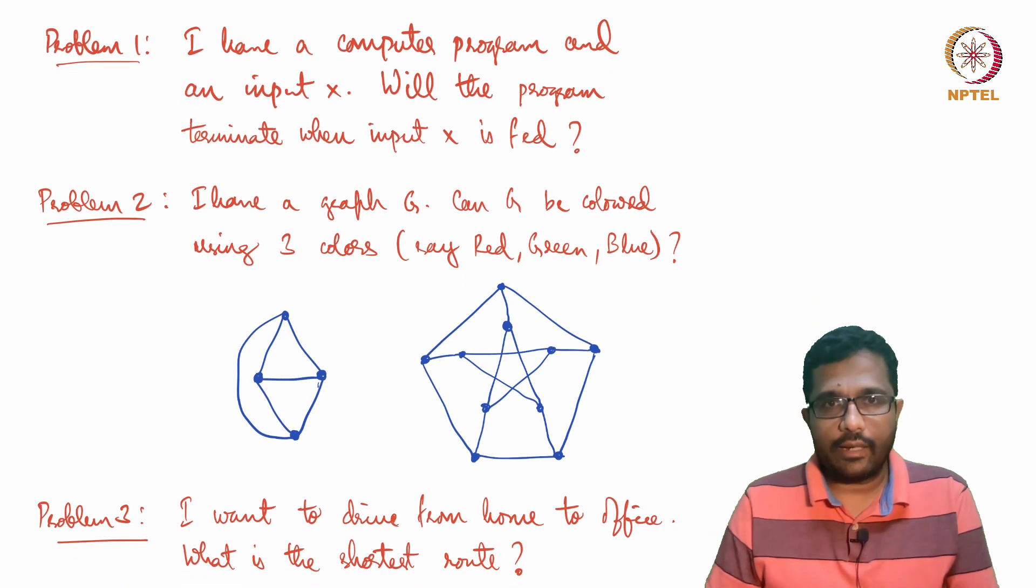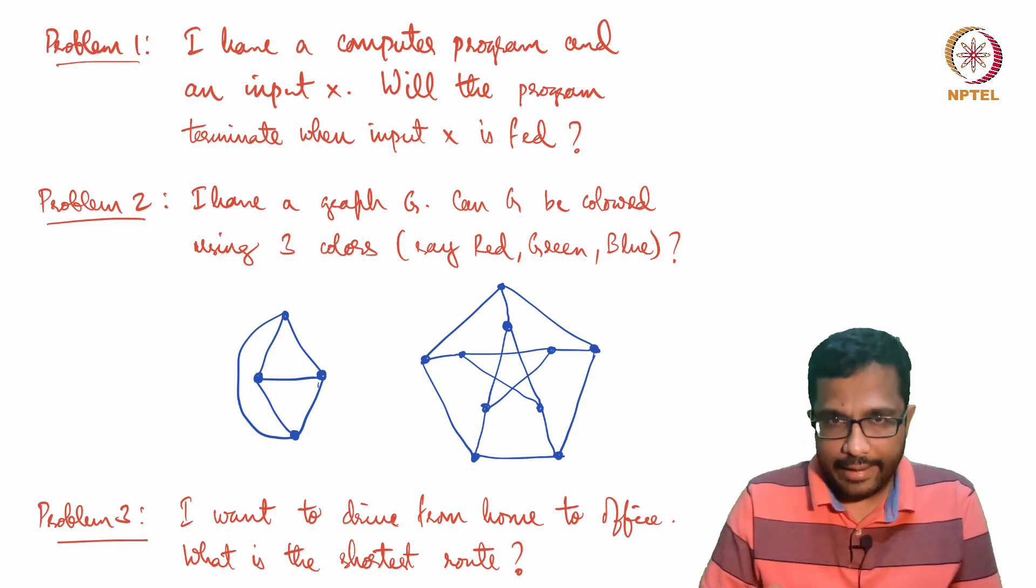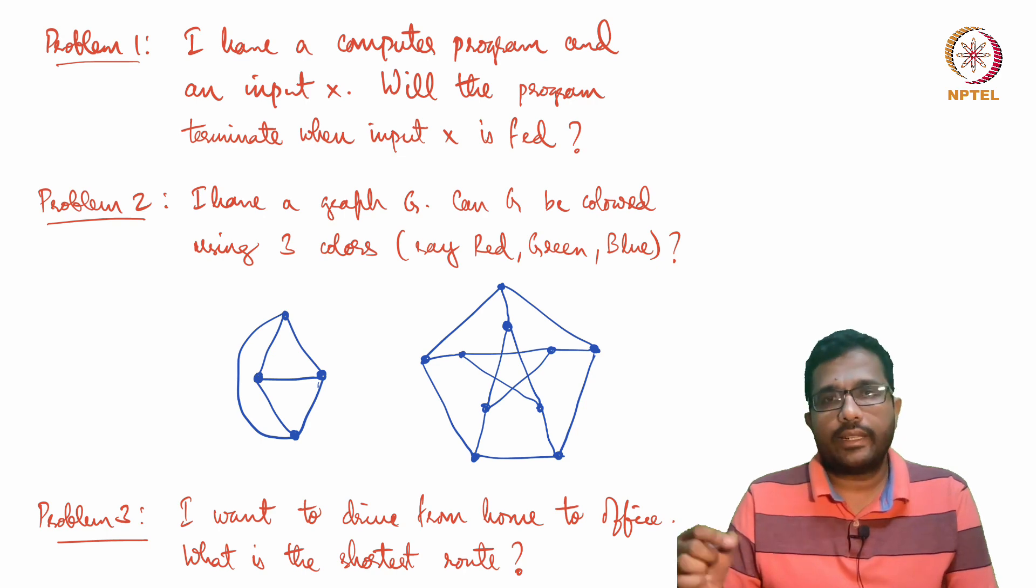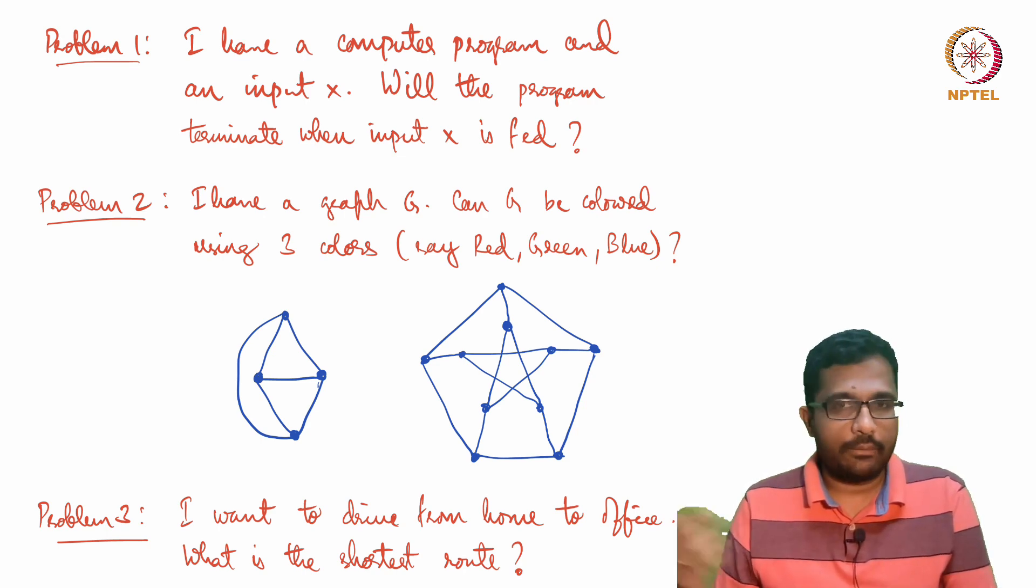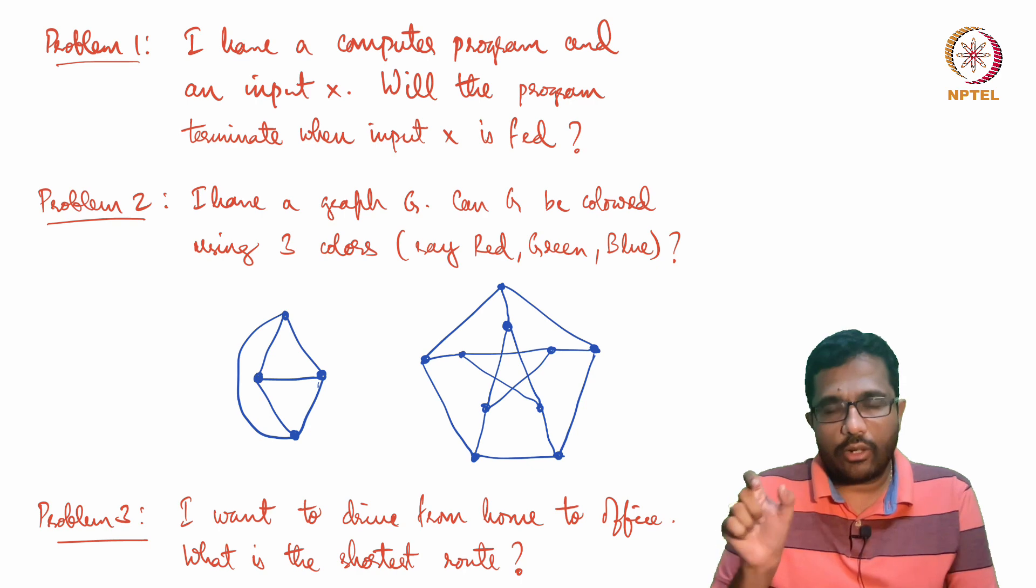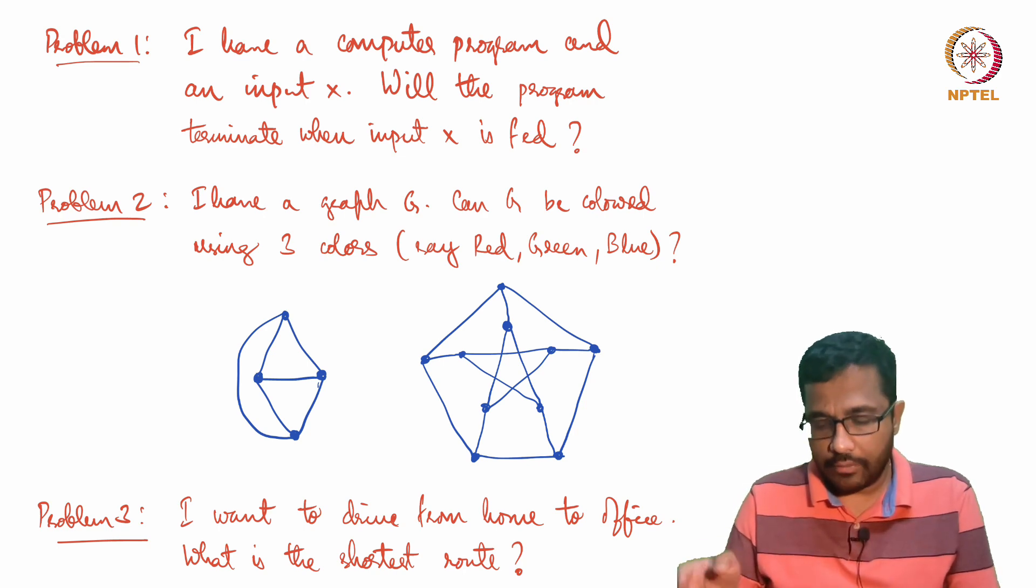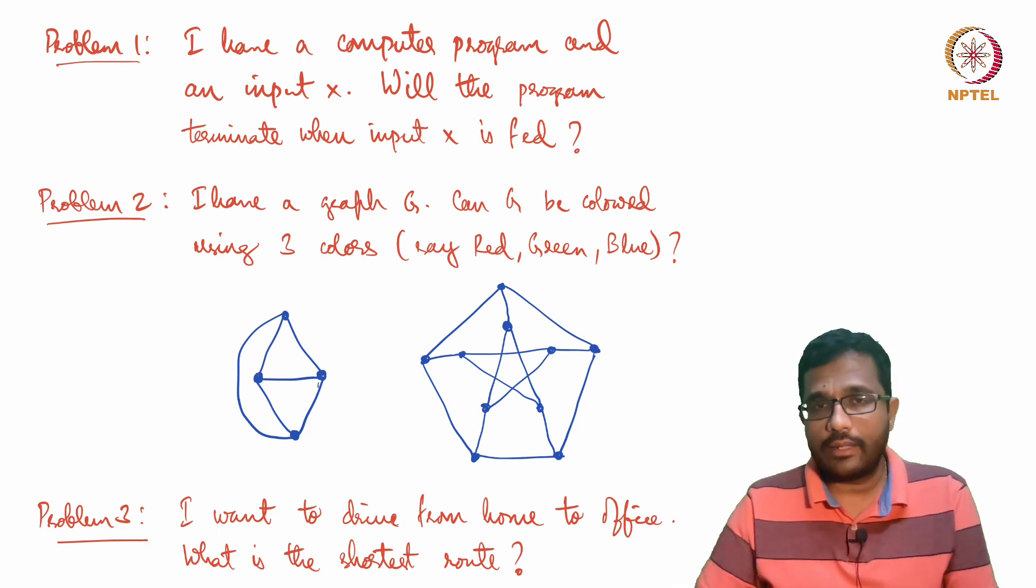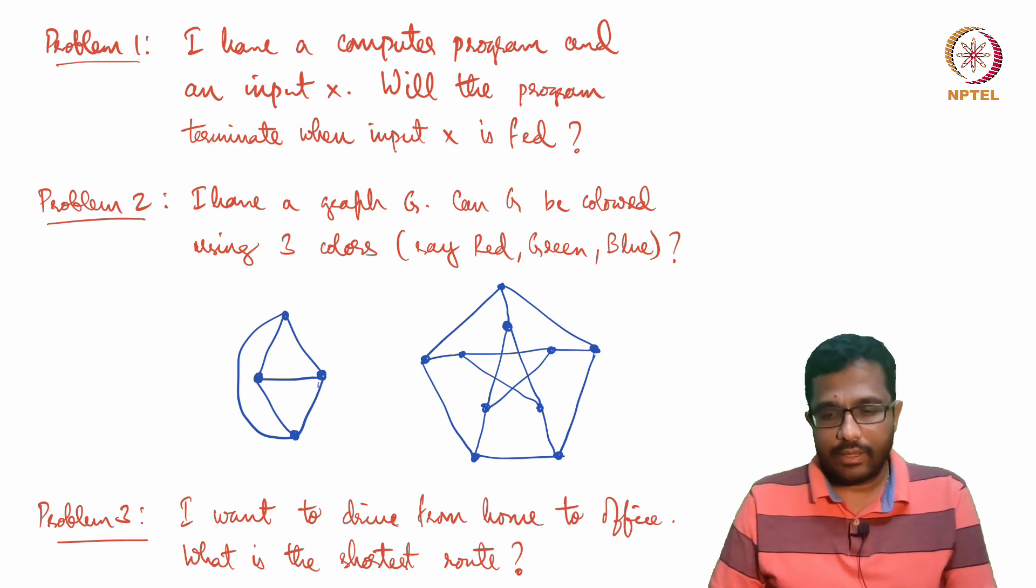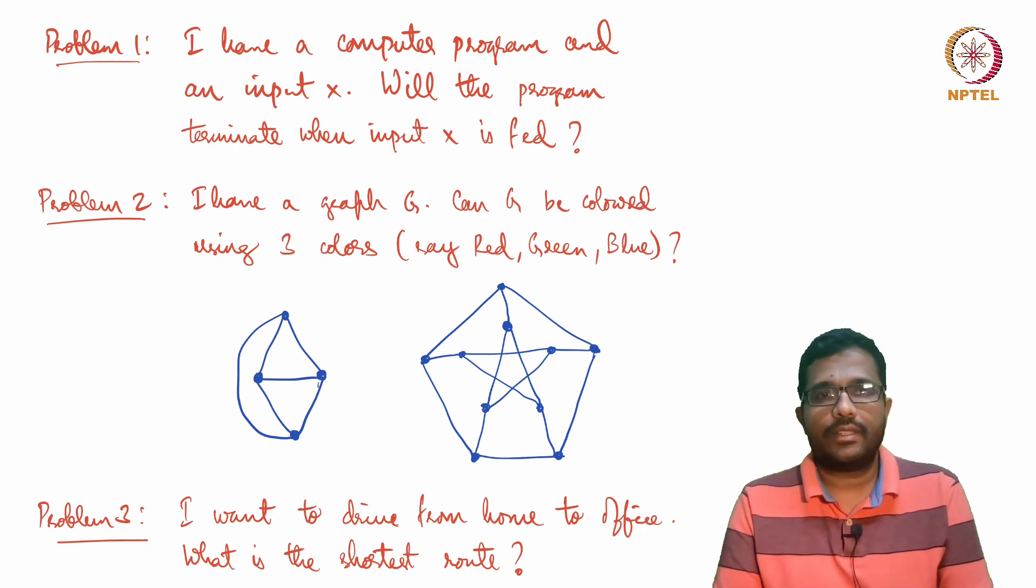The second problem is I have a graph. Graphs are objects like these that I have drawn. They contain dots and edges - the dots are called vertices and the lines between them are called edges. I want to know whether a graph can be colored using three colors - red, green, and blue - such that adjacent dots have different colors. I have drawn two graphs here. One can be colored using three colors and the other cannot. I will not tell you which is which. This is problem two: given a graph, determine whether it can be colored using three colors.